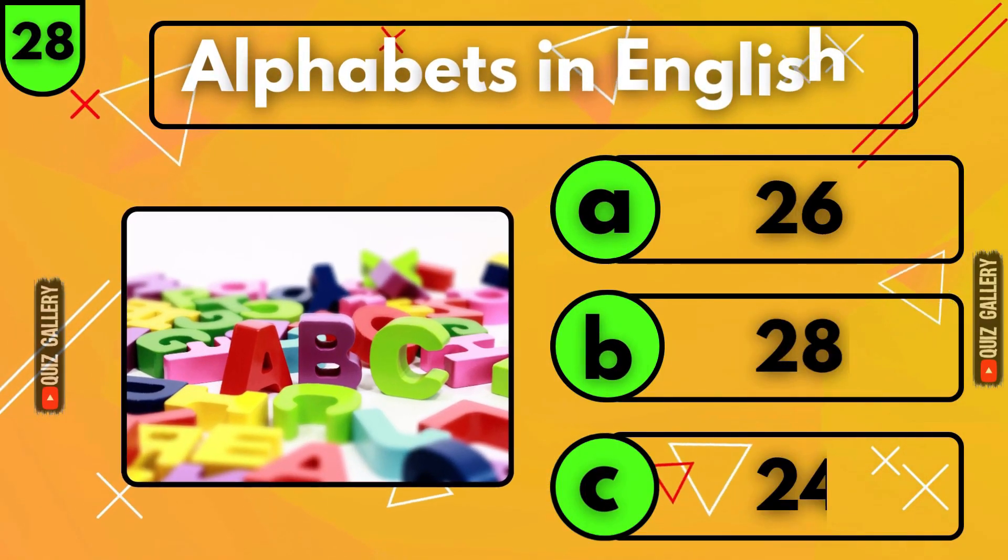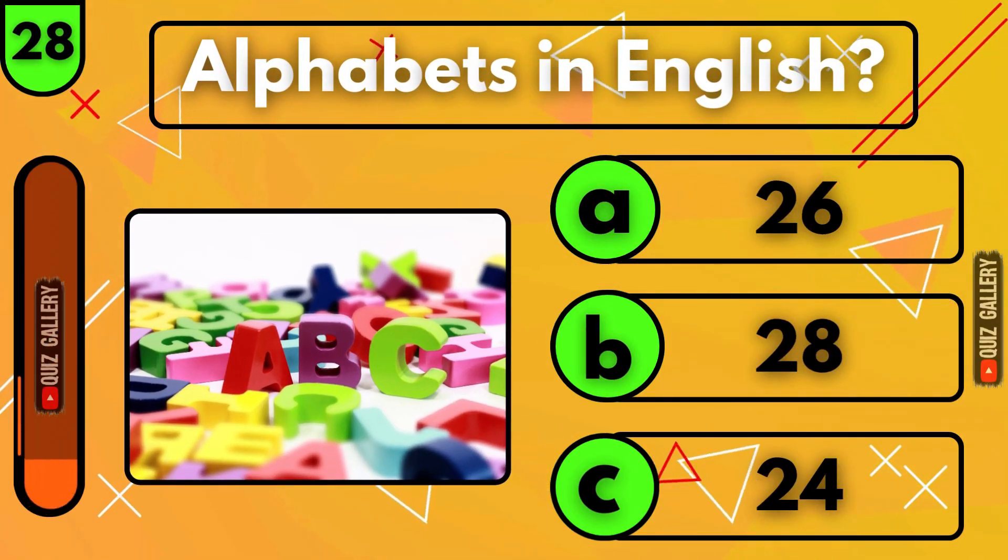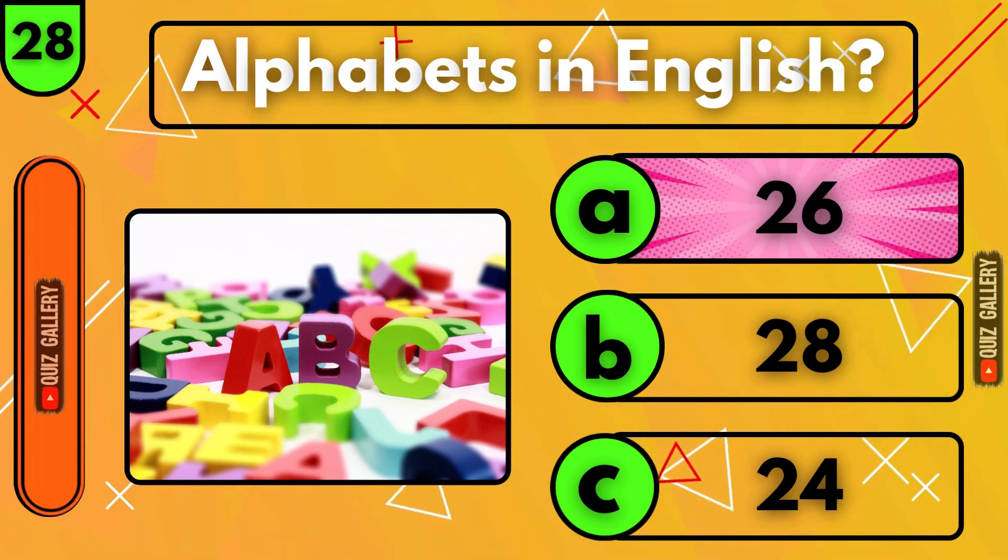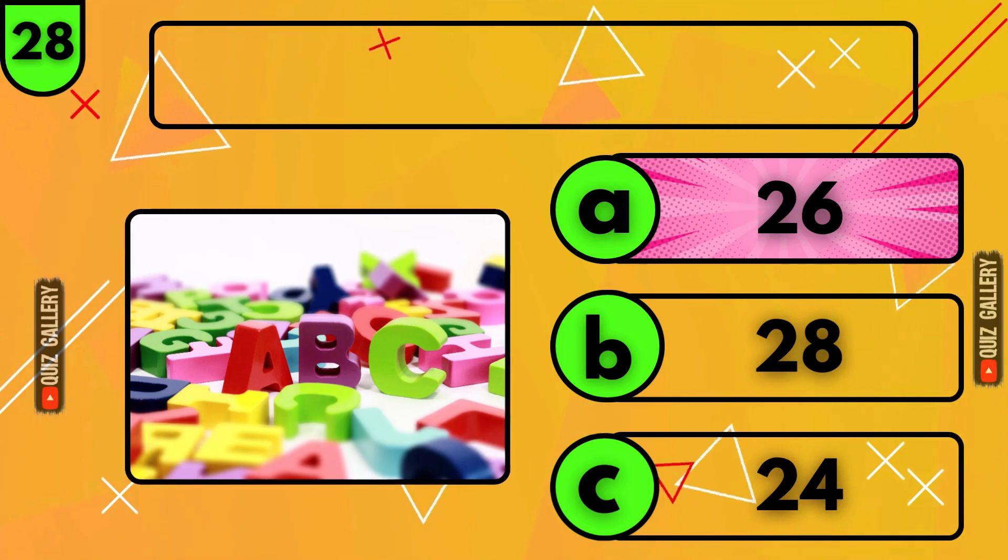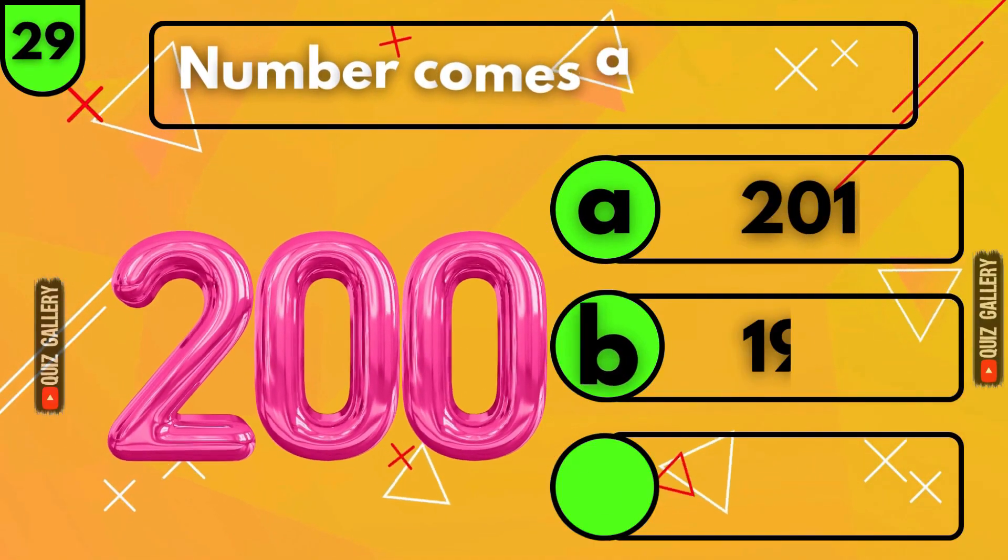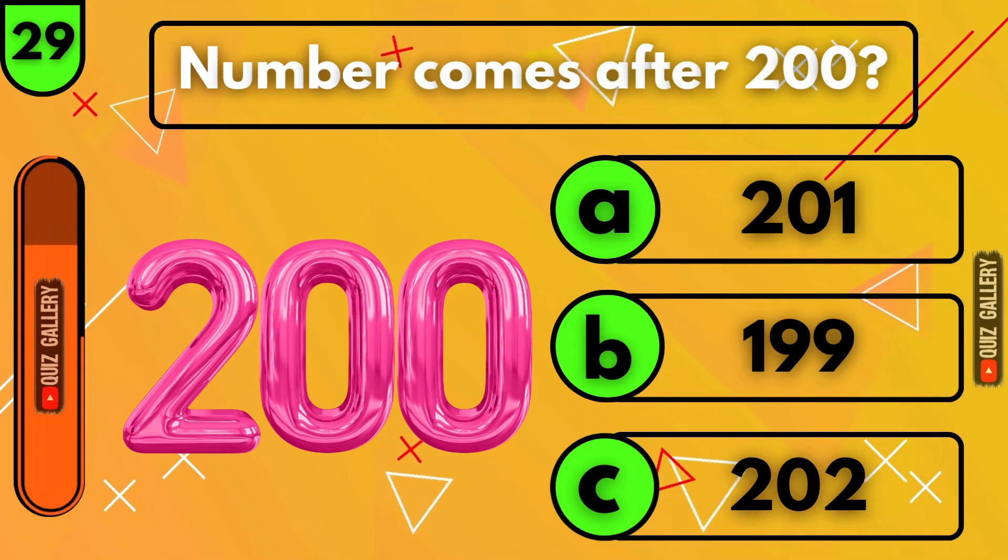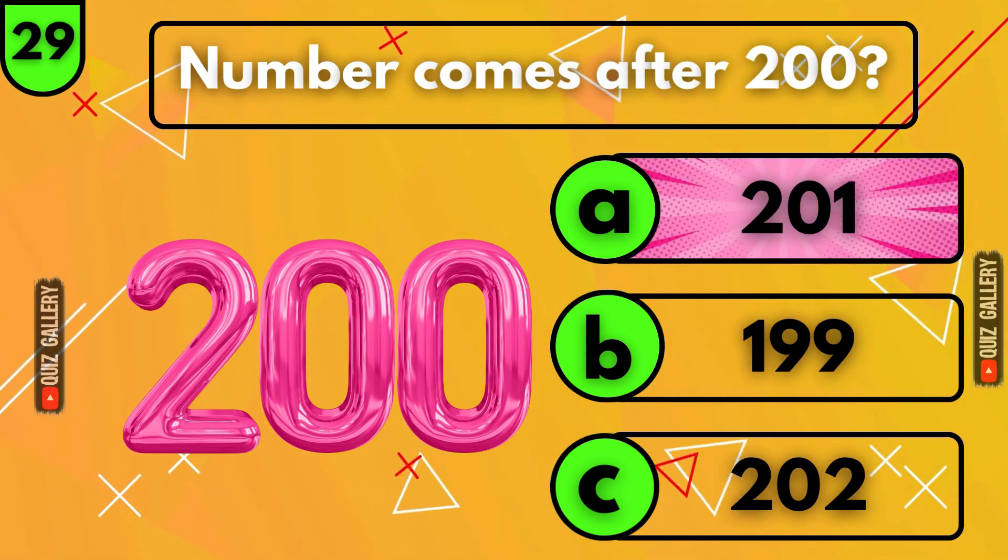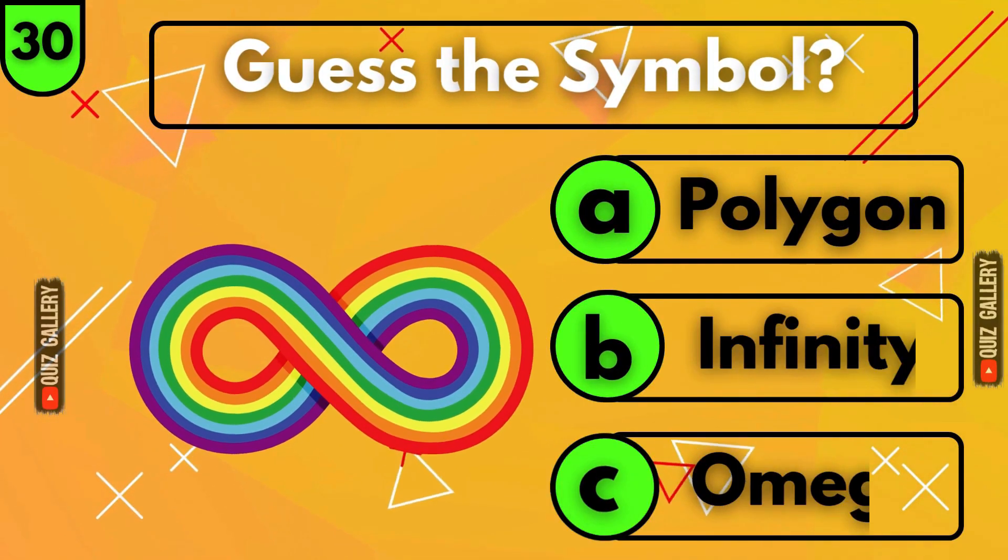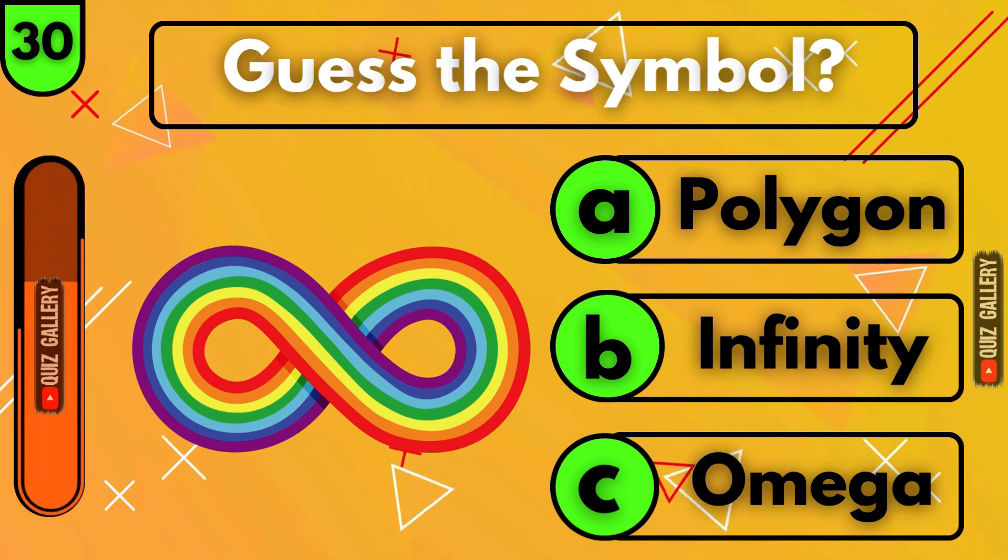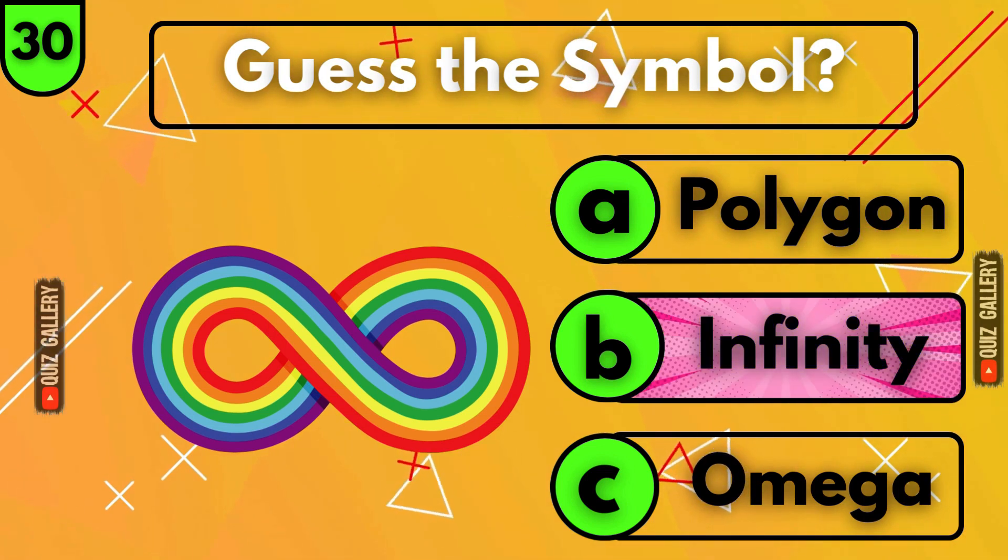Guess the number of alphabets in English language! 26 alphabets! What number comes after 200? 201! Can you guess this symbol? Infinity symbol!